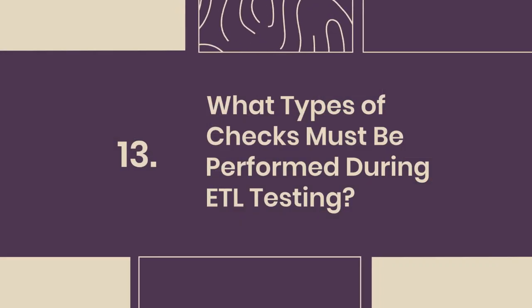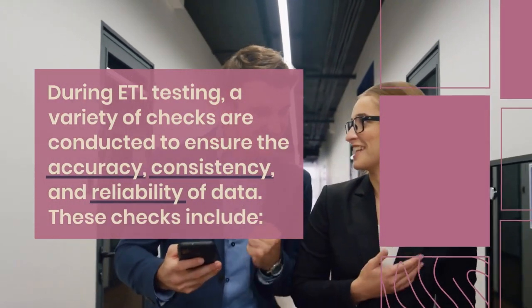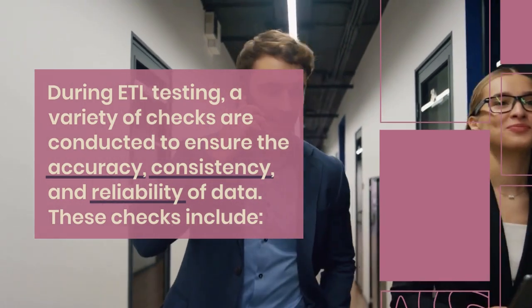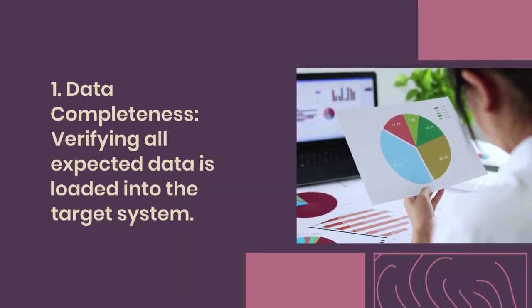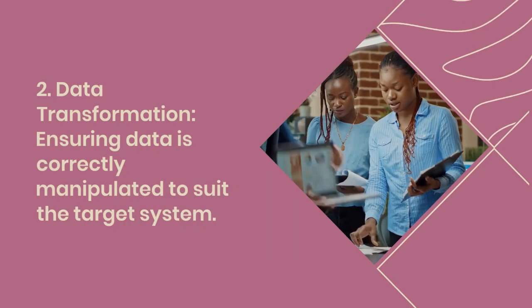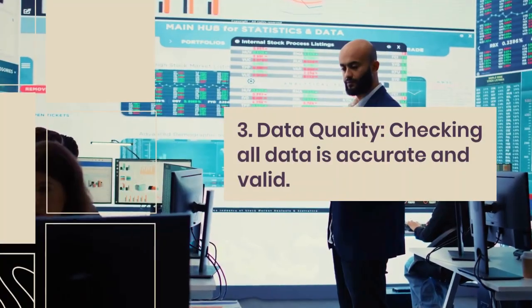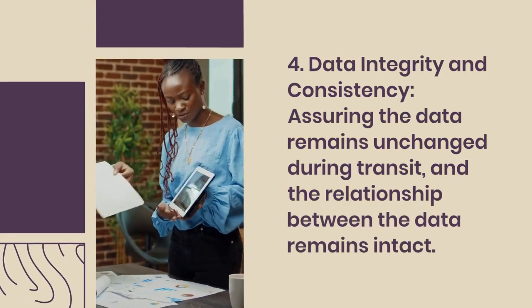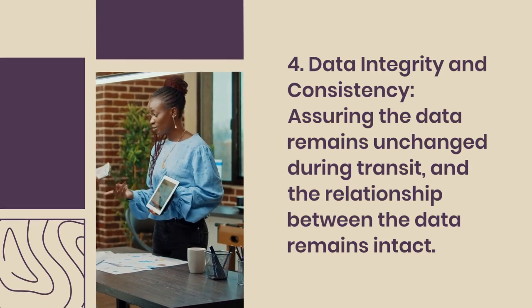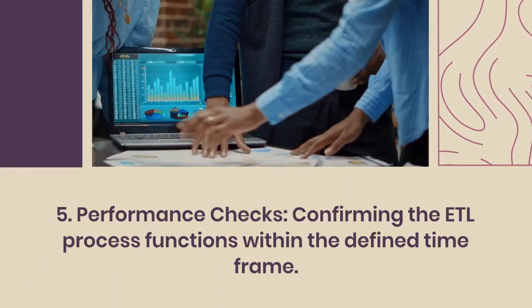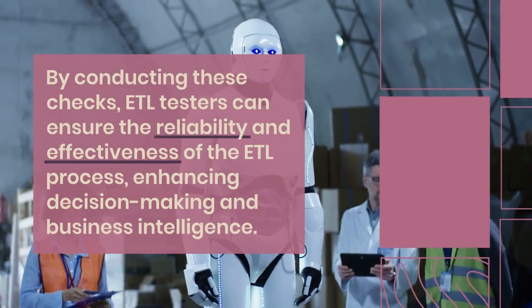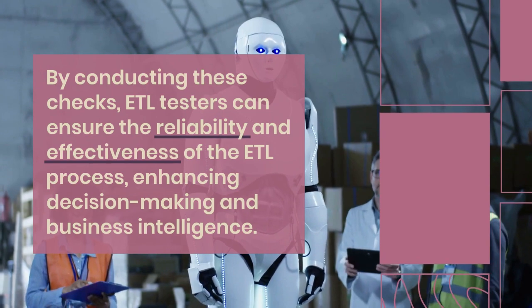Question 13: What types of checks must be performed during ETL testing? During ETL testing, a variety of checks are conducted: data completeness — verifying all expected data is loaded into the target system; data transformation — ensuring data is correctly manipulated to suit the target system; data quality — checking all data is accurate and valid; data integrity and consistency — assuring data remains unchanged during transit and relationships remain intact; and performance checks — confirming the ETL process functions within the defined timeframe.